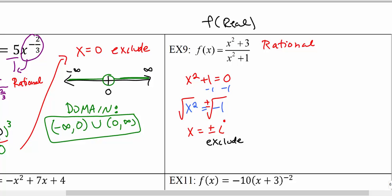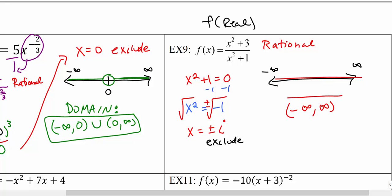Since we only put real numbers into functions, we weren't going to put in imaginary numbers anyway, so there's no need to exclude them. On the real number line there are no imaginary numbers to begin with, so there is nothing to exclude. Our domain turns out to be all real numbers from negative infinity to positive infinity — if your only problems are imaginary, then you really don't have any problems.